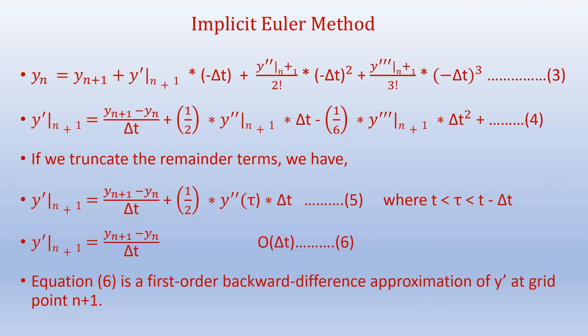If we truncate the remainder terms after delta t, we have y dash n plus 1 equals y n plus 1 minus y n over delta t, plus half times y double dash of tau times delta t, where tau lies between t and t minus delta t. We can rearrange this as y dash at n plus 1 equals y n plus 1 minus y n over delta t, and this is of the order of delta t.